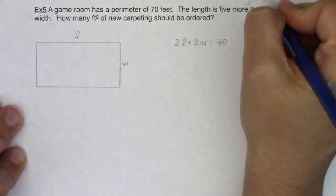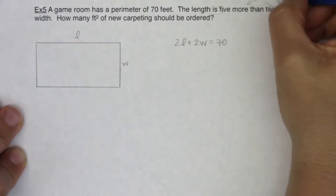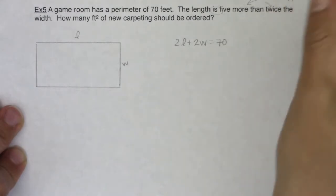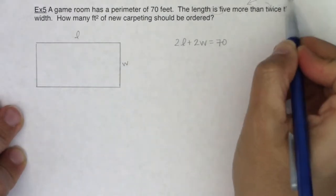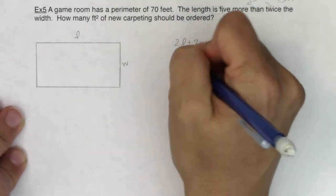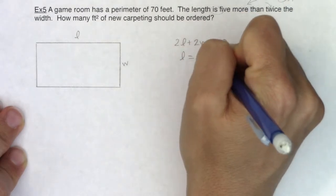With math operations we have addition, subtraction, multiplication, and division. The 'more' indicates addition, the 'twice' indicates multiplication. So the length is five more than twice the width—L equals 5 plus 2W.